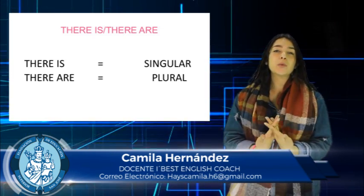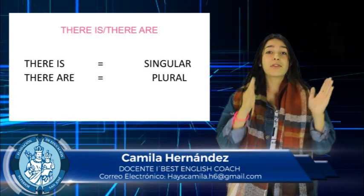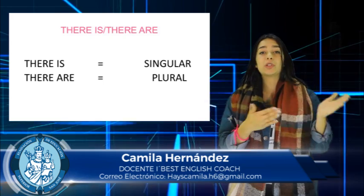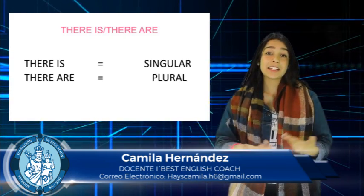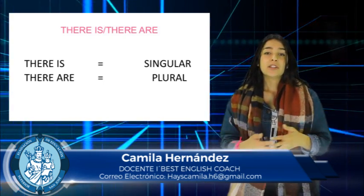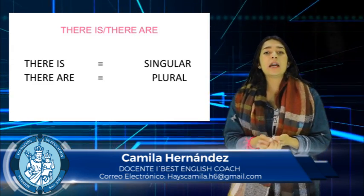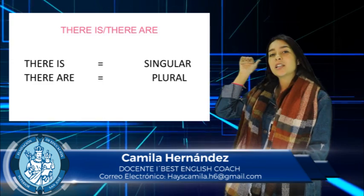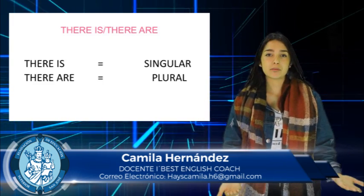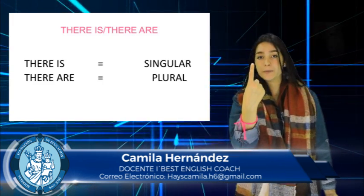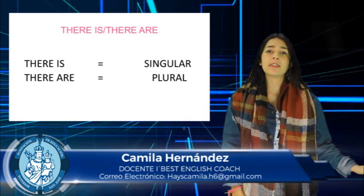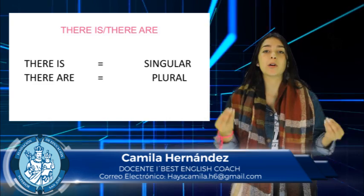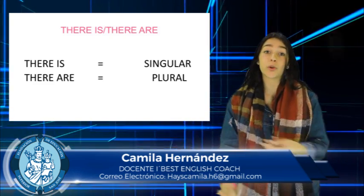Last week we put into practice 'there is' and 'there are.' Remember that we use 'there is' and 'there are' for something that exists. For example, if I say 'there is a chair in this classroom,' it is because I am talking about one thing. But if I say 'there are,' it is because I am going to talk about plural things, people, or different things.